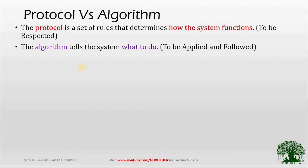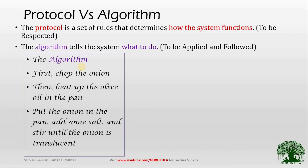Even though it might not be very clear, we will take an example to understand. To make it more interesting I am going to take a cooking recipe. The algorithm for the recipe goes like this: first I will have to chop the onion, then heat up the olive oil in the pan, and once the oil is heated the third step is to put the onion in the pan, add some salt, and stir until the onion is translucent. This step-by-step process is what we call the algorithm.